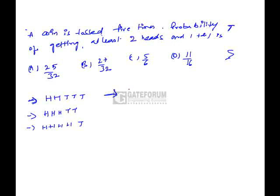When we toss a coin 5 times, the number of ways to get 2 heads and 3 tails is 5! divided by (2! × 3!), because the 2 heads are similar and the 3 tails are similar. This is arranging 5 things of which 2 are identical and 3 are identical.